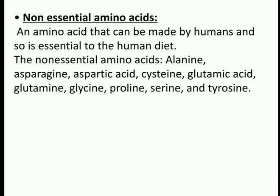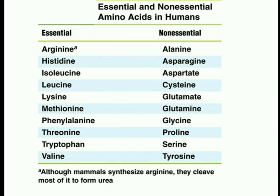Non-essential amino acids can be synthesized by humans and are also present in the diet. Non-essential amino acids include alanine, aspartic acid, cysteine, glutamic acid, glutamine, glycine, proline, serine, and tyrosine. Here we can see a table of essential and non-essential amino acids in humans.